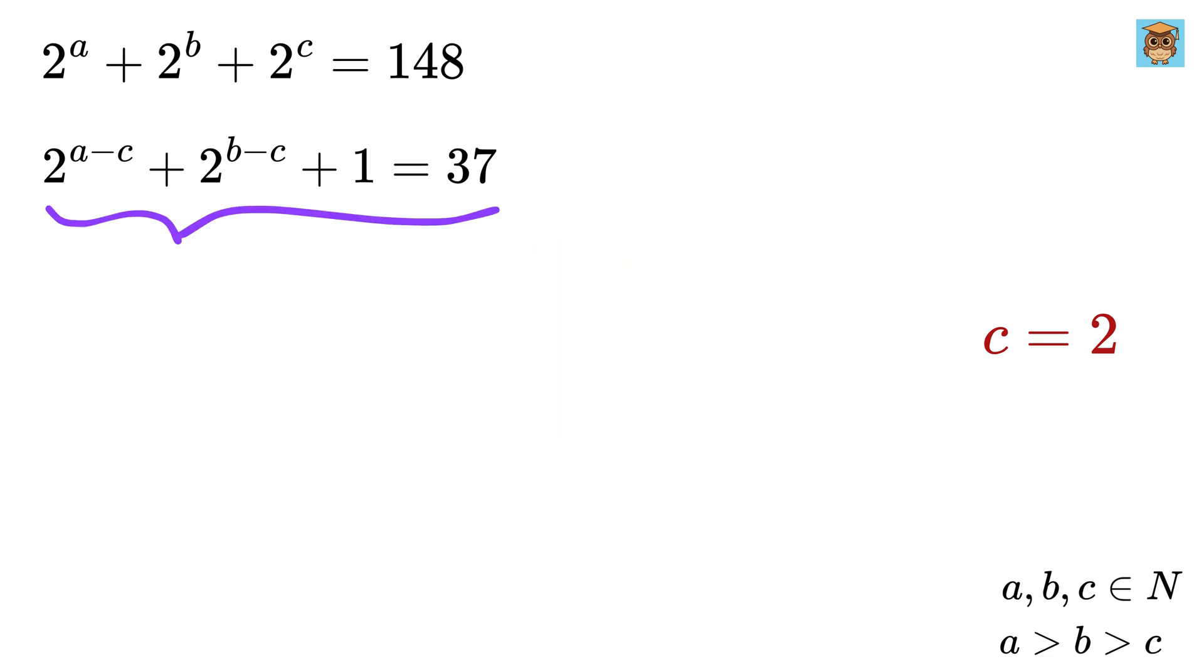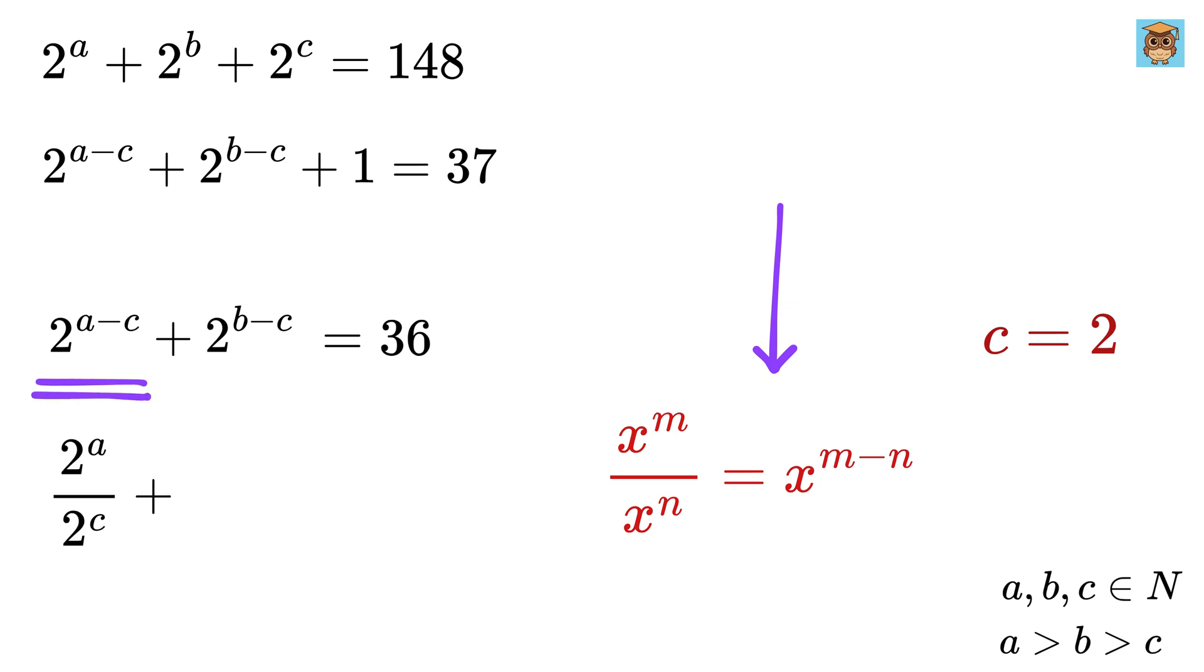Now, look at this equation. We can take this one on the right-hand side to get 2 to the A minus C plus 2 to the B minus C equals 37 minus 1 or 36. Also, using this power rule again, we can rewrite this as 2 to the A over 2 to the C plus 2 to the B over 2 to the C.